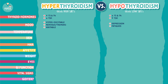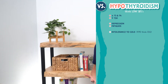Now let's compare temperature. Hyper — think hot; hypo — think cold. Clients with hyperthyroidism are going to have heat intolerance, and clients with hypothyroidism are going to be intolerant to cold.